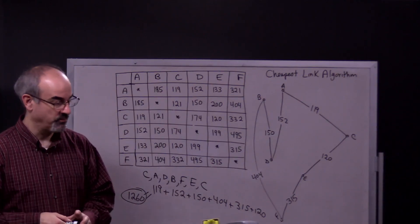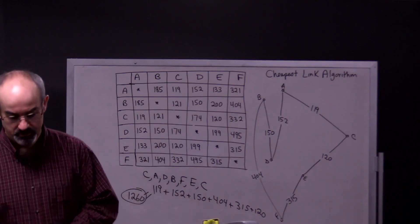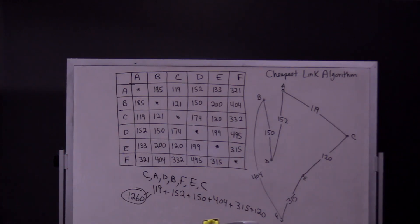So this was an example of using the cheapest link algorithm when you have a chart. You have to draw a picture. There's not an option.